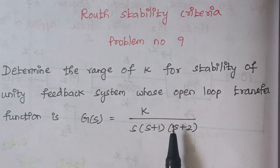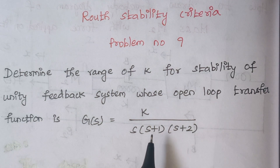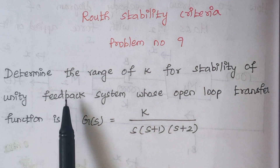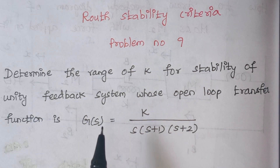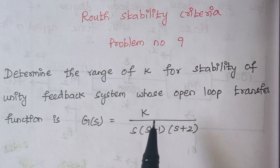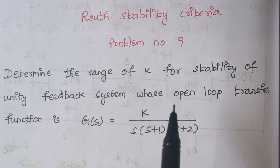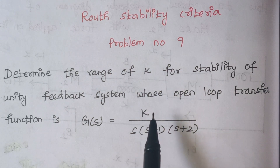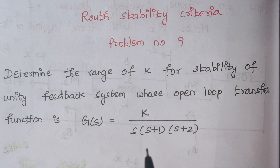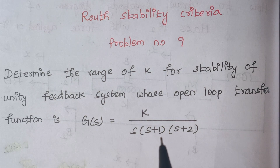The open loop transfer function is given and the type of system is a unity feedback system. When you look at the transfer function, we have a constant K. They are asking us to find the range of K — that is, for what value of K the system will remain stable. In previous problems we have seen how to tell whether a system is stable or not using the characteristic equation.